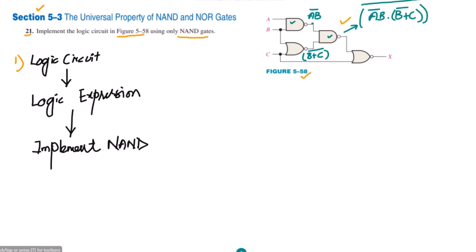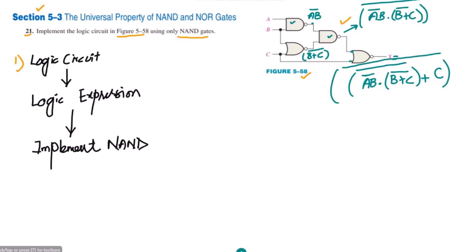This is the output of this first part of the circuit. This is now applied to a NOR gate along with input C. So the output X will be: AB complement dot (B plus C whole complement), all complemented, along with C — and the NOR gate takes the complement of the whole thing.